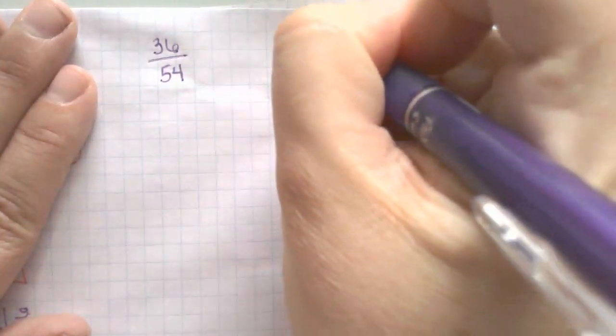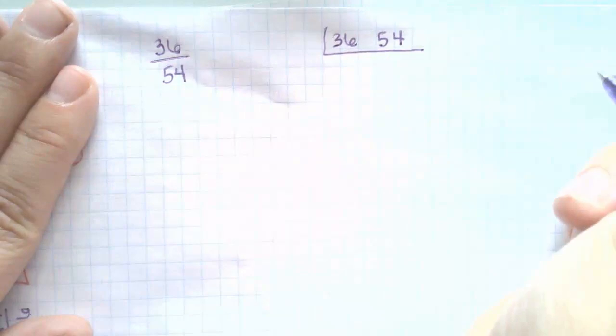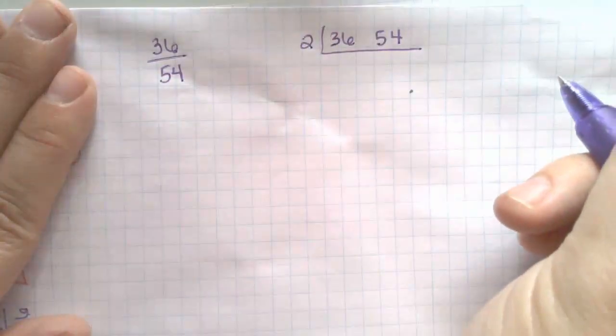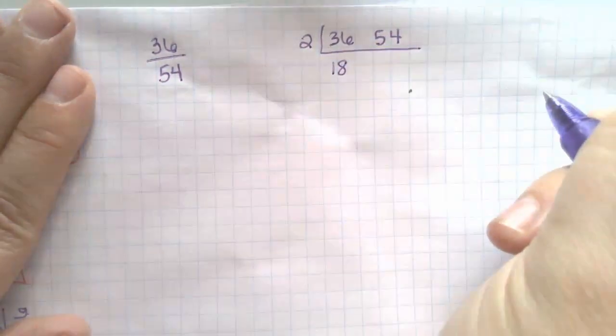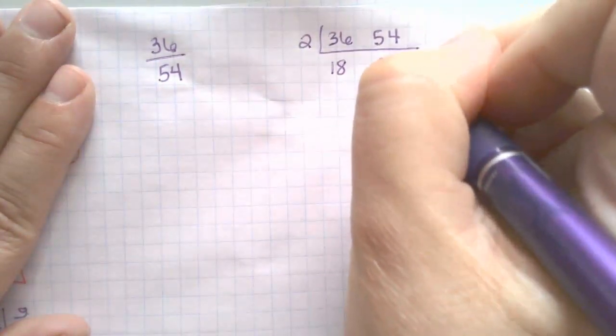Alright. So let's go ahead. I'm going to do the ladder because I am better with the ladder. They're both even numbers. So I'm going to go ahead and choose 2. 36 divided by 2 is 18. 54 divided by 2 is 27.